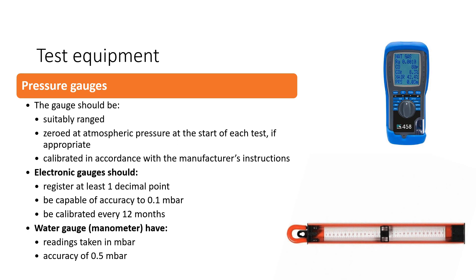Electronic gauges must be more accurate than U-gauges. They should register at least one decimal point — for example, a reading of 8.3 percent shows it's capable of registering a decimal point. Electronic gauges should be capable of an accuracy to a tenth of a millibar (0.1 mbar), and they should be calibrated every 12 months. U-gauges must have readings in millibar and must have an accuracy of half a millibar.